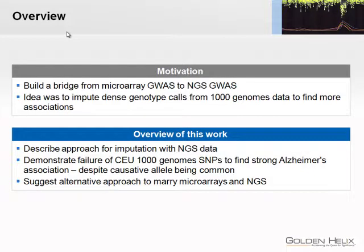So we've been doing a lot of GWAS studies over the years. I've talked in previous years about copy number studies. We've also done a lot of SNP studies, and as we've been observing the sequencing technologies coming out, we've been thinking about how we can bridge all of this microarray work with next-gen sequencing. The idea when I wrote this abstract was to impute dense genotype calls from the 1000 Genomes data, hopefully to find more associations.